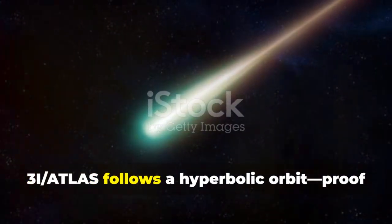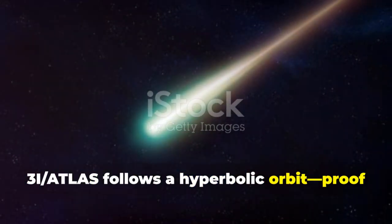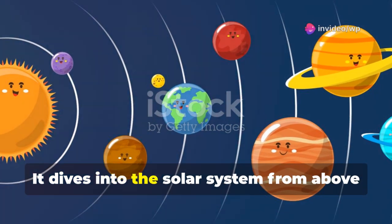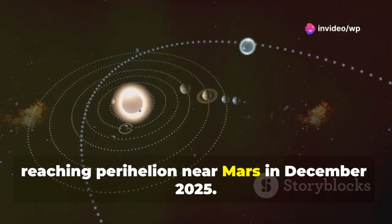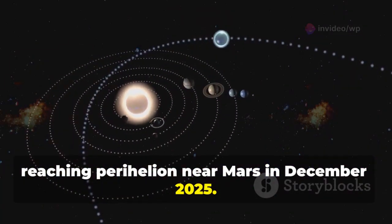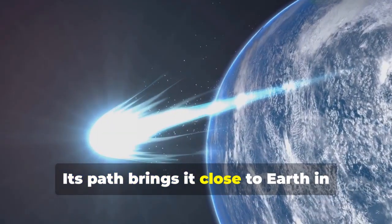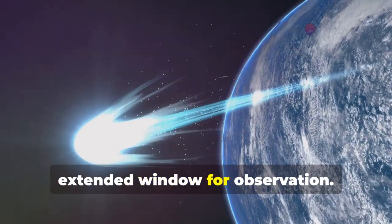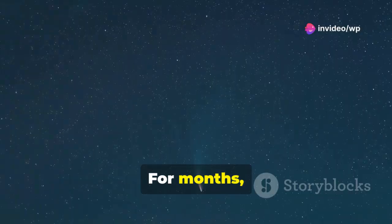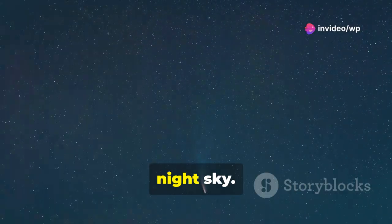3I Atlas follows a hyperbolic orbit, proof it's just passing through. It dives into the solar system from above the ecliptic, reaching perihelion near Mars in December 2025. Its path brings it close to Earth in January 2026, offering a rare, extended window for observation. For months, it will be a slow-moving target in the night sky.